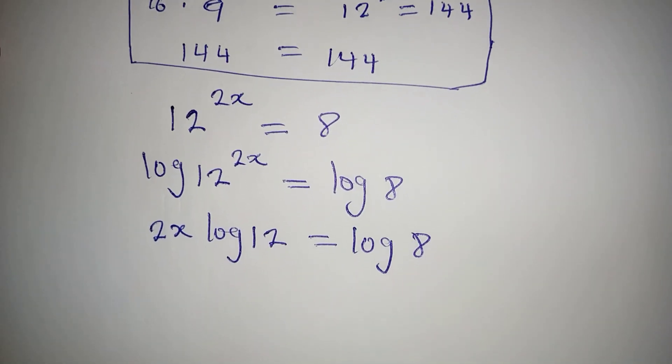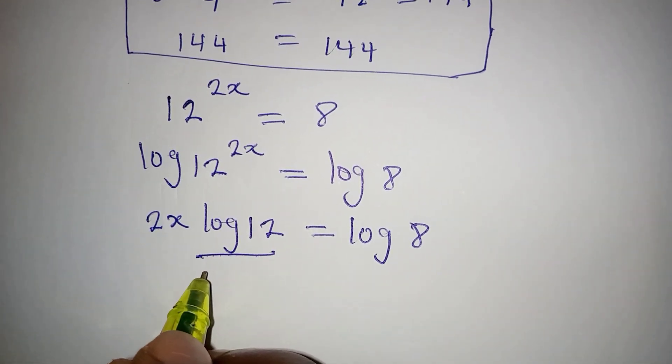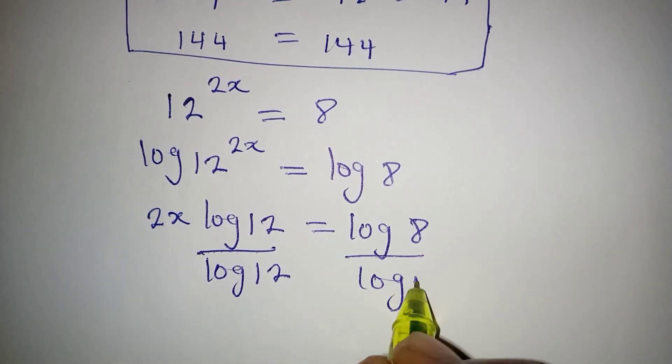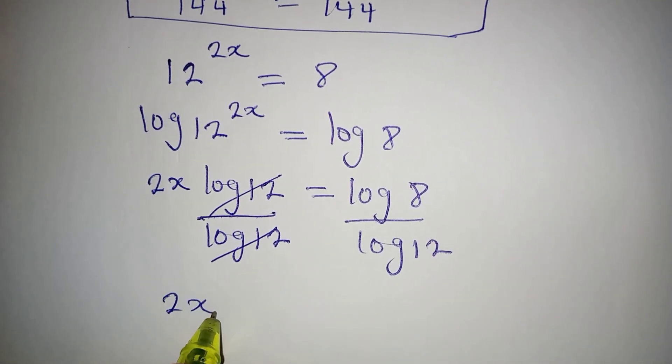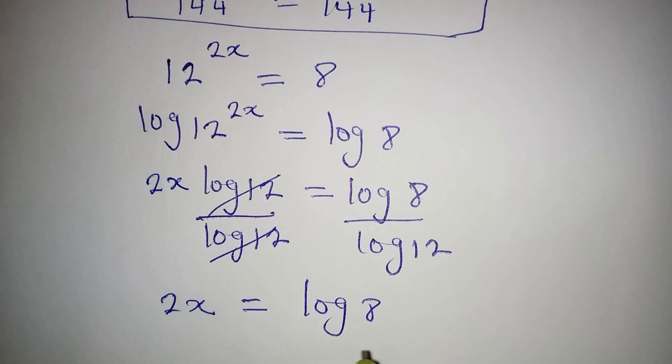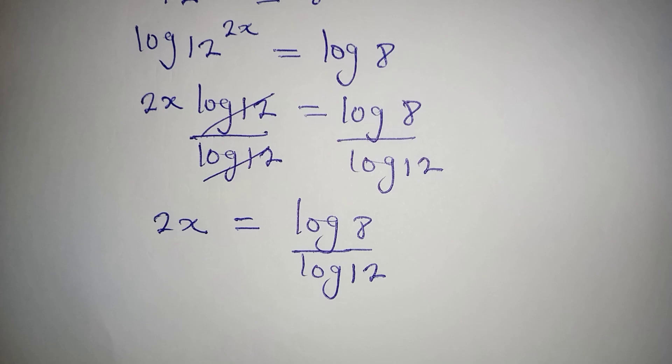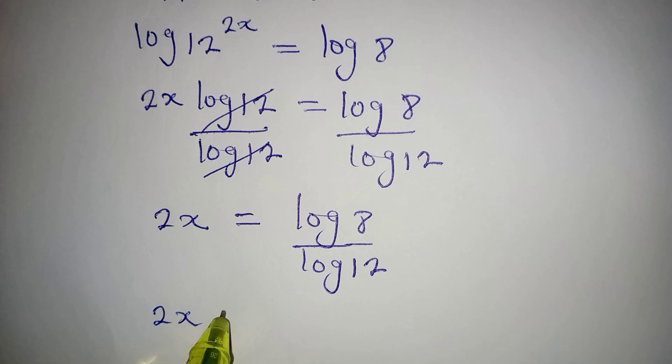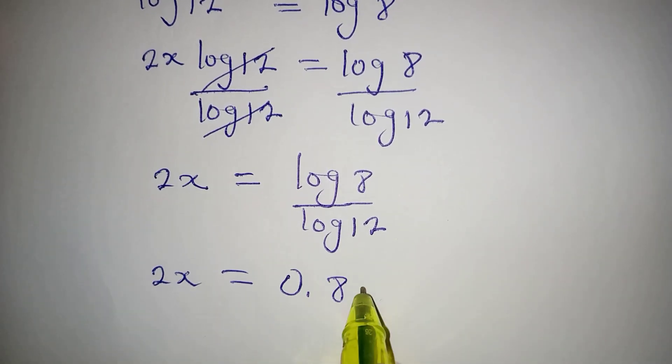Now what do we do from here? Since we are looking for the value of x, we divide both sides by log 12. Now 2x is equal to log 8 over log 12. I would like to have a decimal answer, so 2x equals log 8 over log 12, which is approximately 0.837.